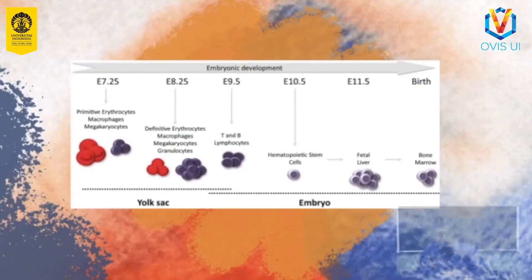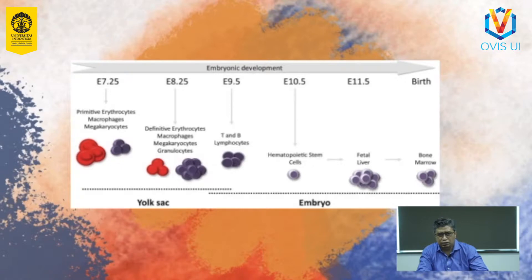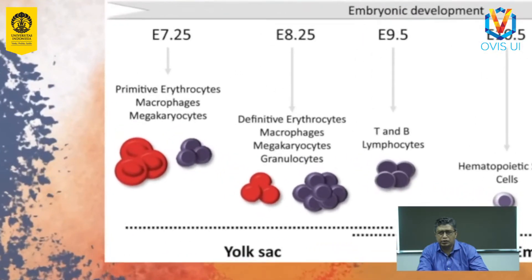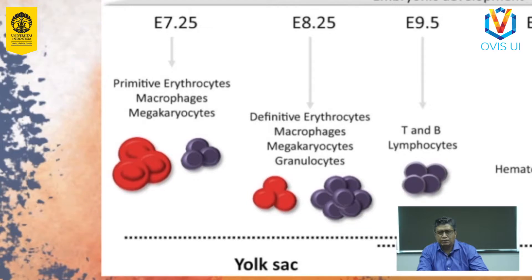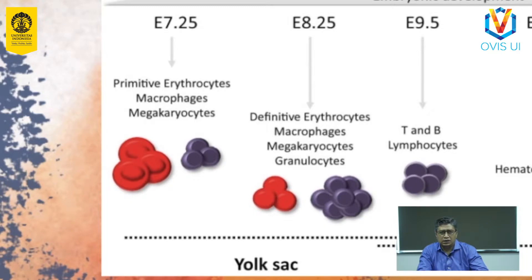Proses pembentukan sel darah pertama kali terjadi di awal masa embrionik, di yolk sac. Pada saat itu, mesodermal ekstraembrionik berdiferensiasi membentuk prekursor darah pertama yang akan menjadi eritroid primitif yang unik, hanya ada pada masa ini. Sel hematopoietik yang ada di yolk sac disebut juga sel hematopoietik primitif karena berperan menghasilkan sel darah merah yang memfasilitasi hantaran oksigen pada fetus yang pertumbuhannya tinggi. Sel darah merah yang dihasilkan mengekspresikan globin embrional, dan sel hematopoietik primitif tersebut akan berangsur-angsur digantikan dengan hematopoietik dewasa.